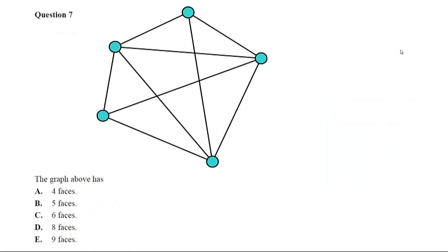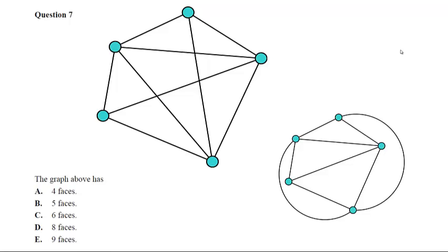This one here is relating to planar graphs. So the graph we've got at the moment is not planar because we can see there are some edges intersecting where there are no vertices in the middle there. So the question asks the graph above has how many faces? At the moment we can't count that, so the first thing we need to do is redraw that graph as planar.